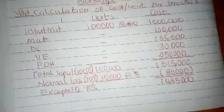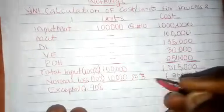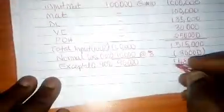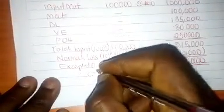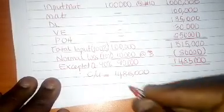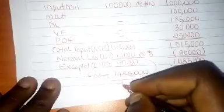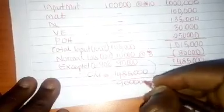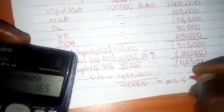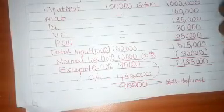When you subtract this, the expected output units will be 90,000. Therefore, our cost per unit is 1,485,000 divided by 90,000 units. We have 16 Naira and 50 kobo per unit. That's our cost per unit for process 2.